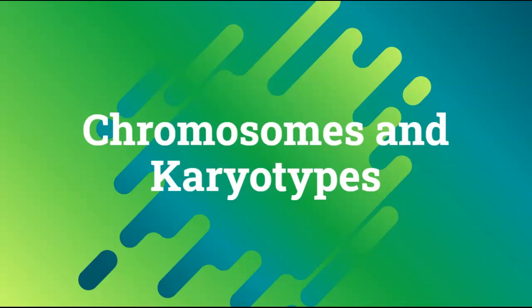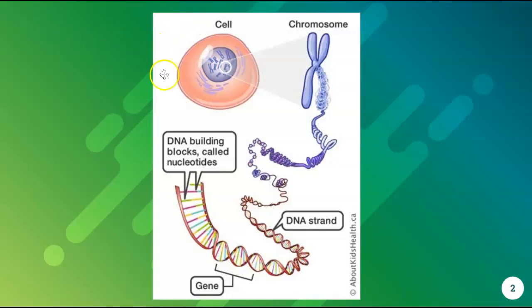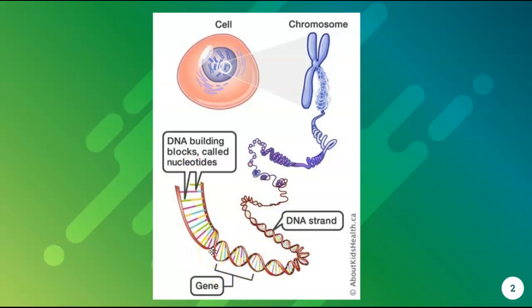Let's go back and remind ourselves. Inside your cell — this would be an animal cell, I can tell because it's circular — we've got a nucleus, and inside the nucleus is where the DNA is. DNA is a double strand, double helix. A little segment of DNA is called a gene, and one gene codes for a protein. If you take a huge long piece of DNA that's coiled up, you get a chromosome.